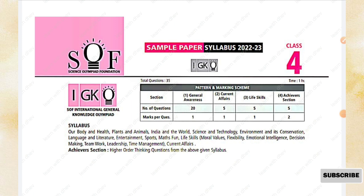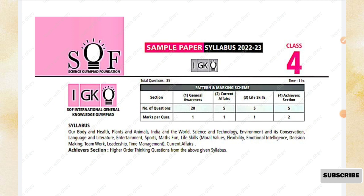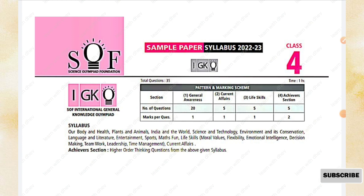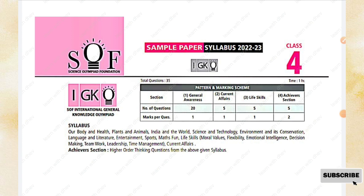This paper consists of four sections. The first is General Awareness, consisting of 20 questions each carrying one mark. The second section is Current Affairs, consisting of five questions each carrying one mark. The third section is Life Skills, consisting of five questions each carrying one mark. The last is the Achiever Section with five higher order thinking skill questions, each carrying two marks.